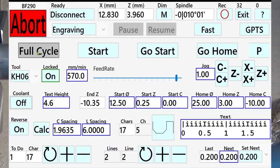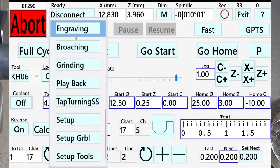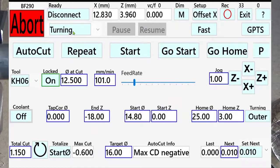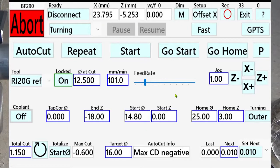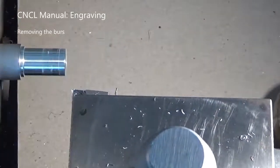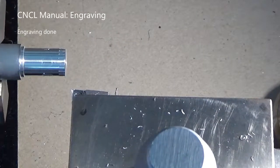Engraving is done. We are going to remove the burr by turning the workpiece a very little amount. So we select the turning task. I accept the last tool.